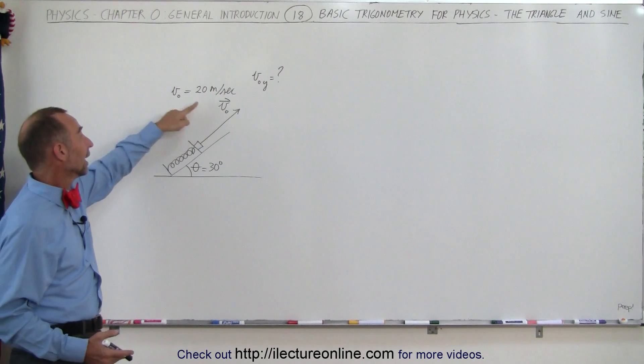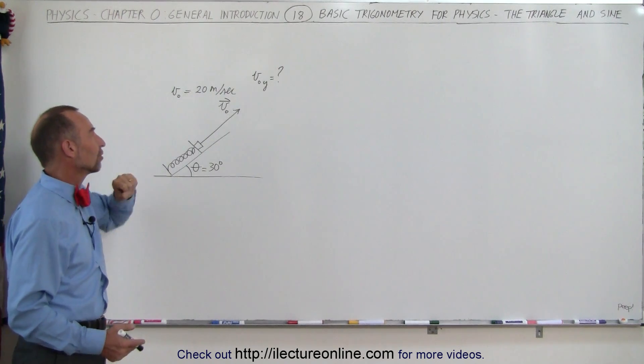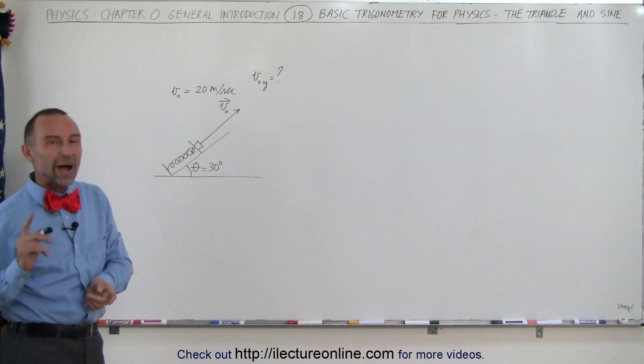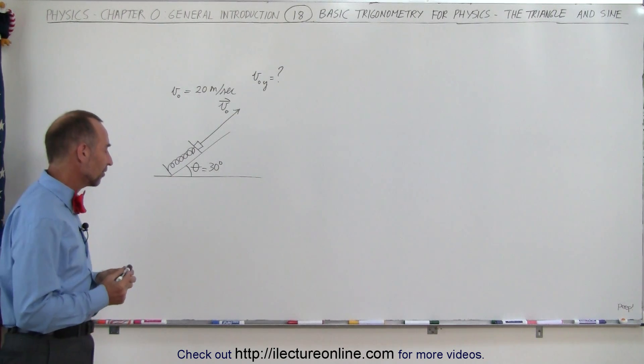Notice that the velocity is a vector and that the magnitude of the vector is 20 meters per second. The angle is 30 degrees and we want to know the y component of that initial velocity.